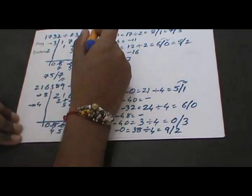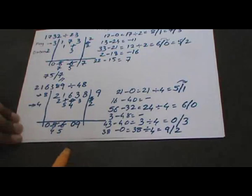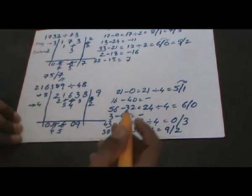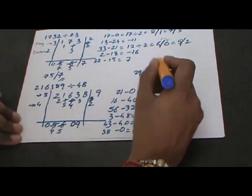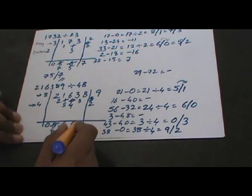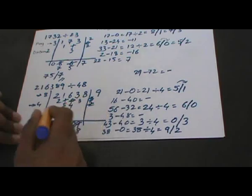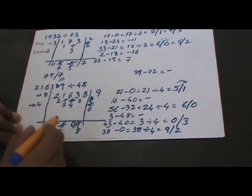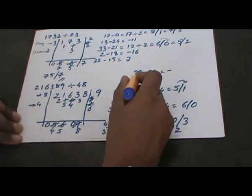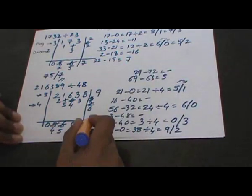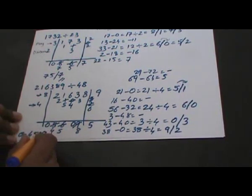We have entered the remainder column, so we just do multiplication and subtraction. 8 multiplied by 9 gives 72, subtracted from 29 gives a negative number. We decrease the quotient by 1 and increase the remainder by 4, giving quotient 8 and remainder 6. 8 multiplied by 8 gives 64, subtracted from 69 gives 5, which is positive. So the quotient is 4508 and the remainder is 5 — that's the answer.